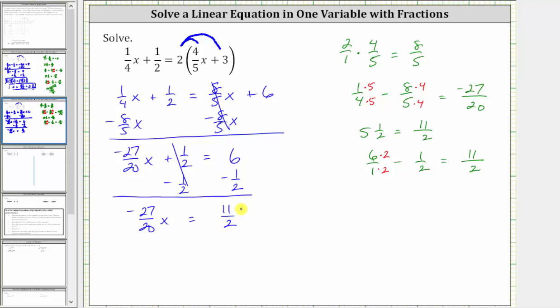And now for the last step, we multiply or divide to solve for x. Negative 27/20 x means negative 27/20 times x. So we may be thinking we should divide by this fraction. Remember, dividing by a fraction is equivalent to multiplying by the reciprocal. And therefore, for the last step, we'll multiply both sides of the equation by negative 20/27.